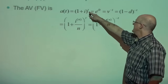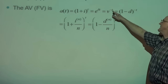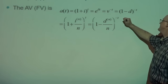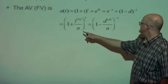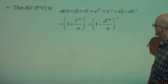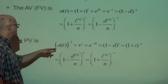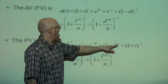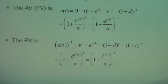Here are all the different ways of representing the accumulation function: (1+i)^T with effective annual rate i; e^(δT) with force of interest δ; v^(-T) with discount factor v; (1-d)^(-T) with effective discount rate d. The present value is the reciprocal: v^T = e^(-δT) = (1-d)^T = (1+i)^(-T). These are all equivalent representations, and you'll see all of them used in various problems.